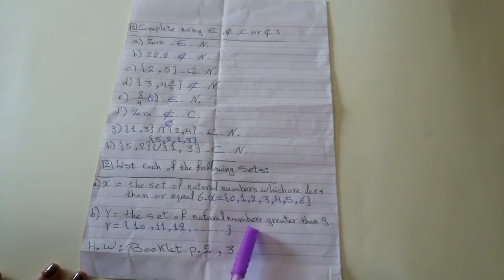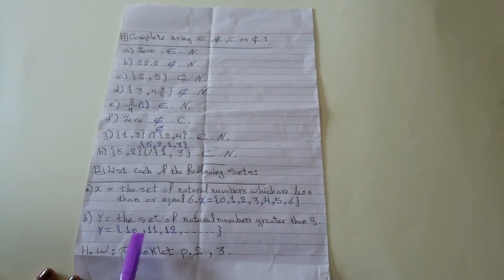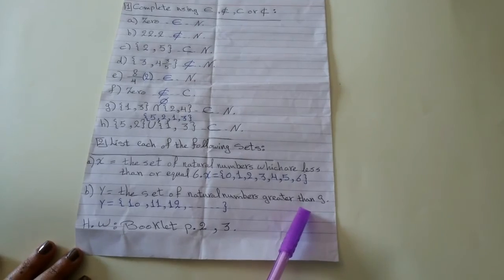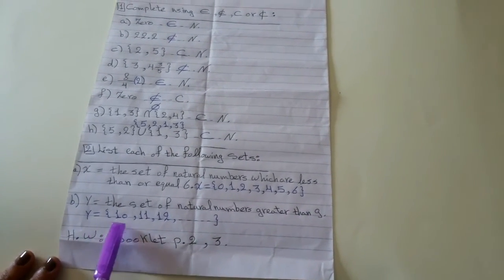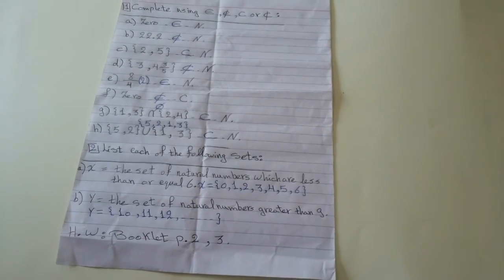Y, the set of natural numbers greater than 9. Y equals greater than, he didn't ask me to put equal. So, greater than 9, 10, 11, 12 and so on. This is an infinite set.